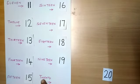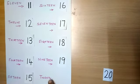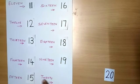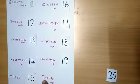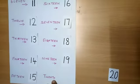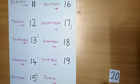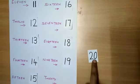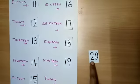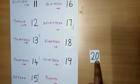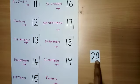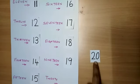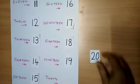T-W-E-N-T-Y. That is 20. This is number 20. 2 and 0 makes 20. This is number 20.